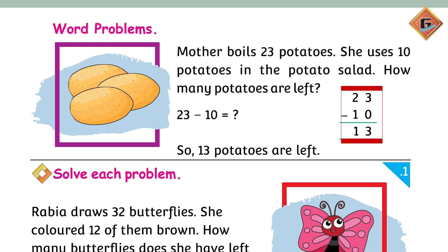First, subtract ones from ones: 3 from 0 is 3. And 2 minus 1 equals 1. Aur ab aap isse ekattha likhenge, so it is 13. So 13 potatoes are left. Solve each problem: Rabia draws 32 butterflies. She colored